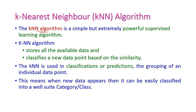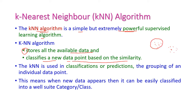The K-nearest neighbor algorithm is a very simple but extremely powerful supervised learning algorithm. The algorithm stores all available data and classifies a new data point based on similarity. Initially, it stores all the data points. Suppose two different groups exist and a new data point comes in — it will automatically be allocated to a particular group based on the similarity of items in that group.